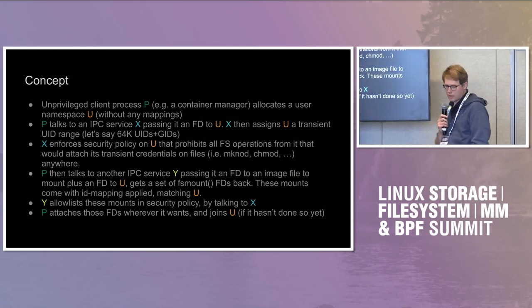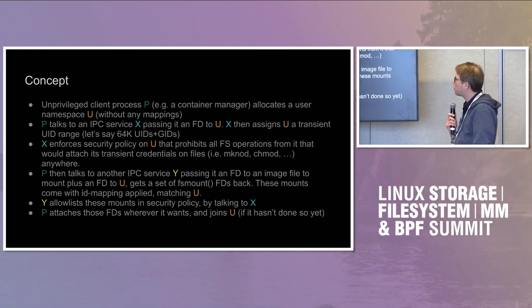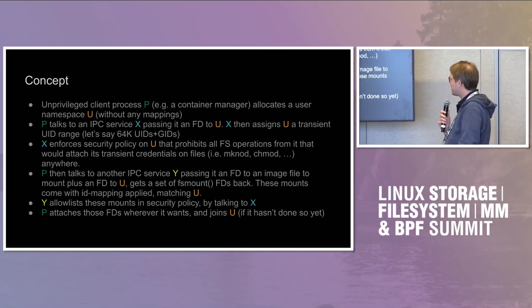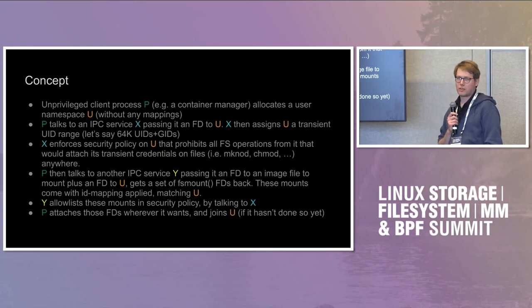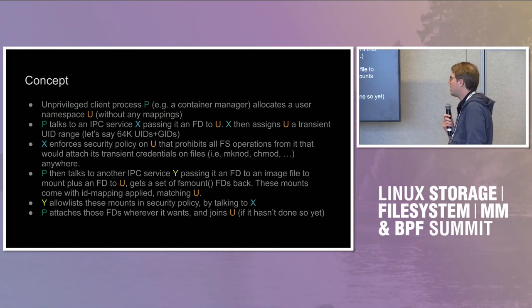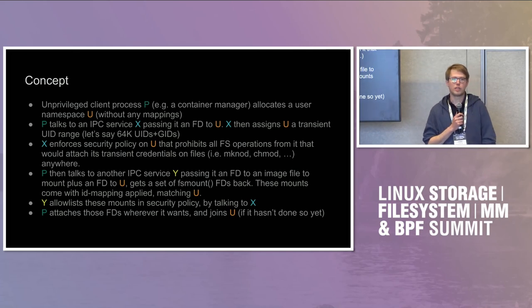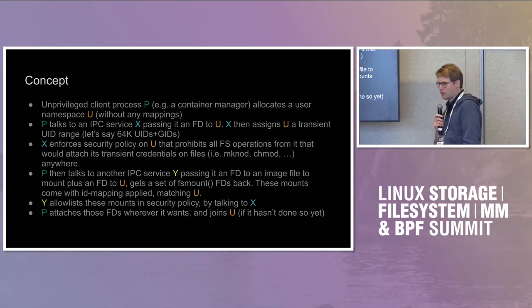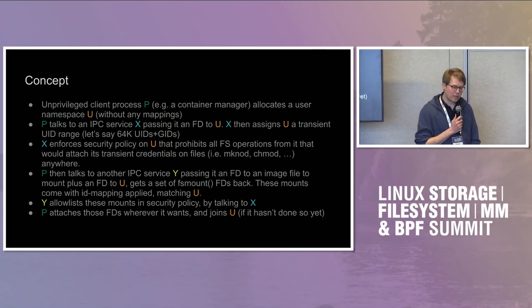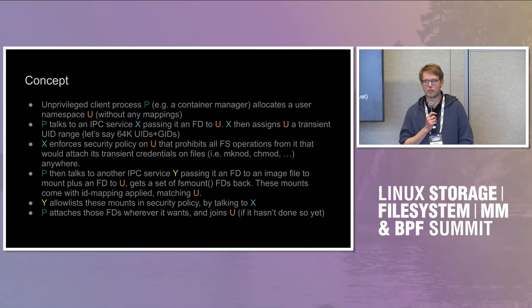The general concept: you have an unprivileged client process P — which could be a container manager — that allocates a user namespace U without any mappings. Then it talks to some IPC service running on the host, provided by systemd, and passes the file descriptor to the user namespace. That service then assigns a transient UID range. The key idea is that we do not do persistent UID range assignment anymore, but transient ones — as long as that user namespace exists, it has that UID range assigned.